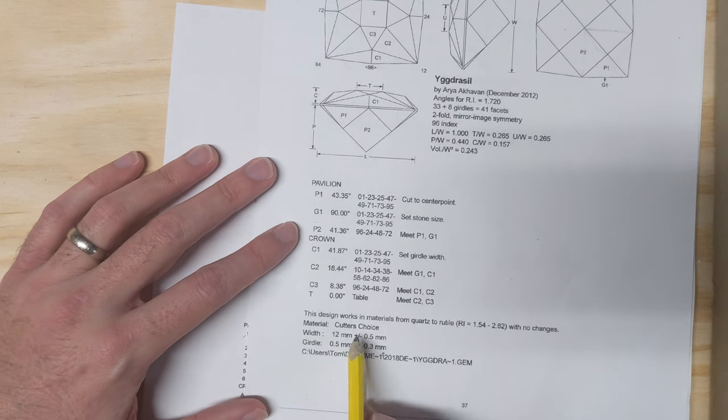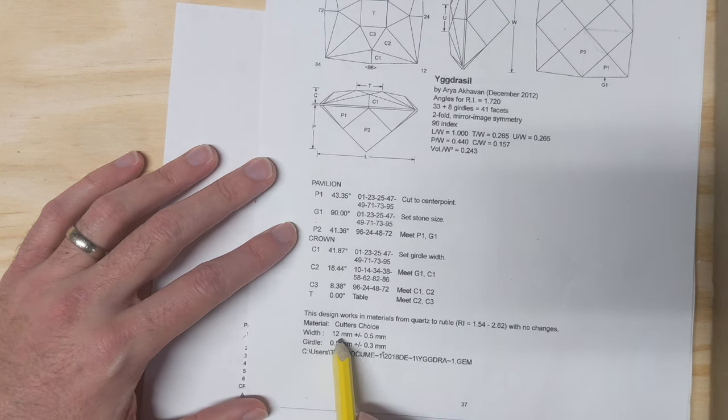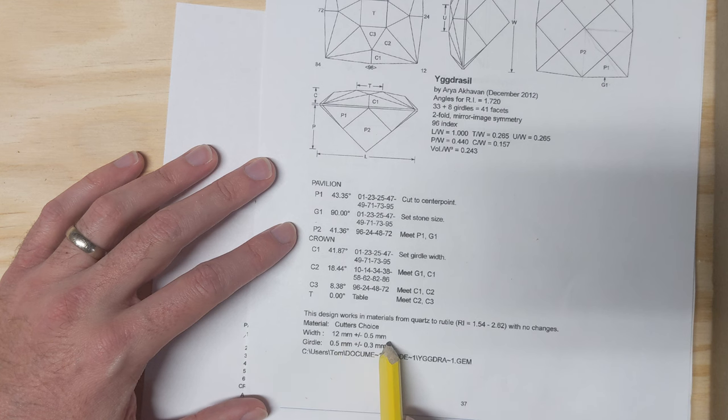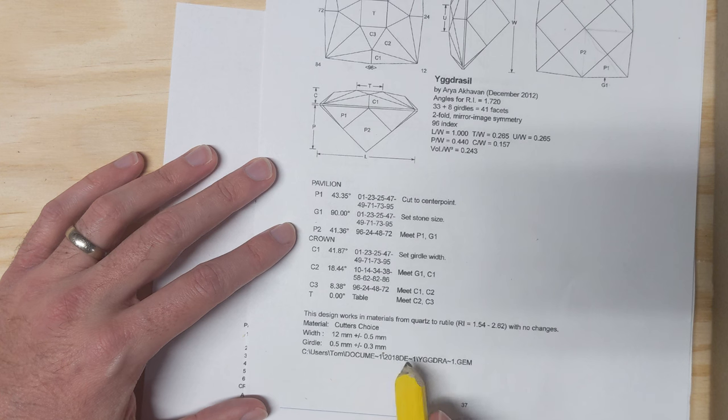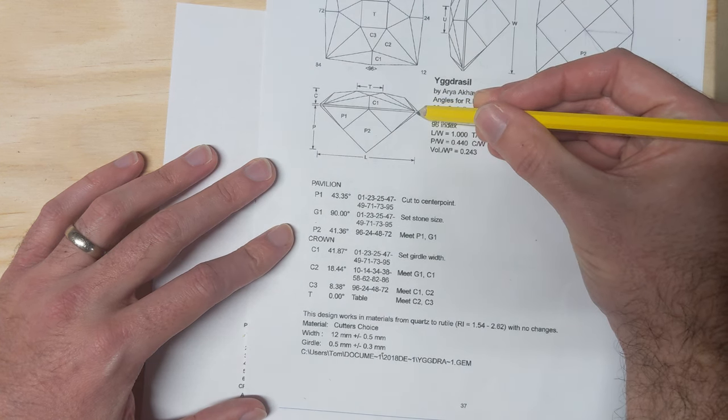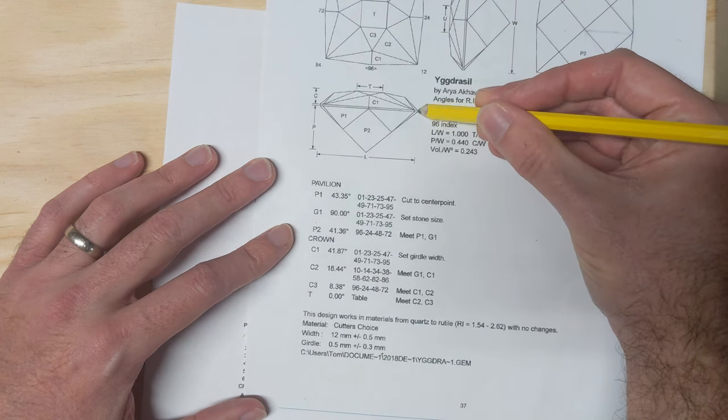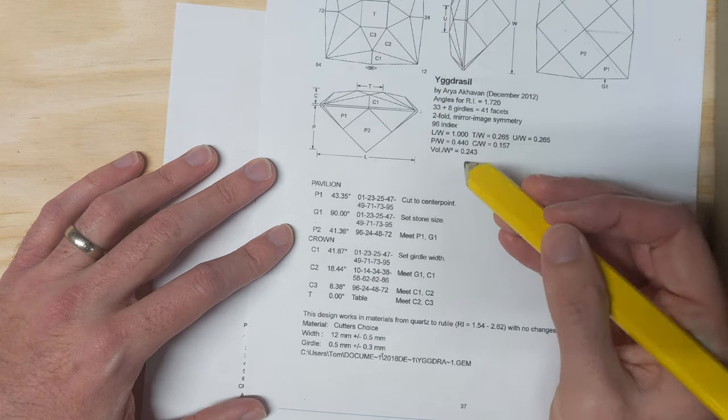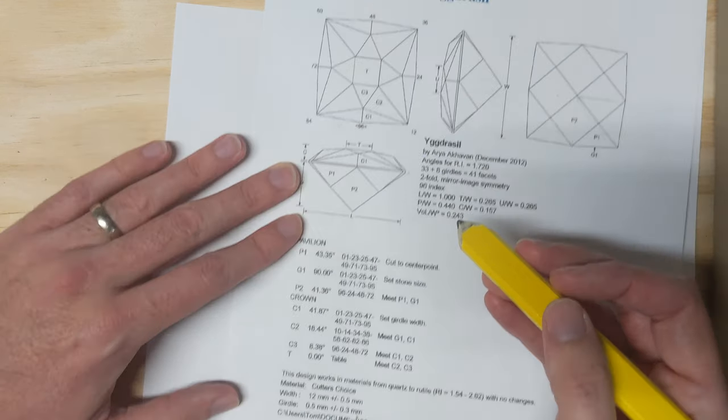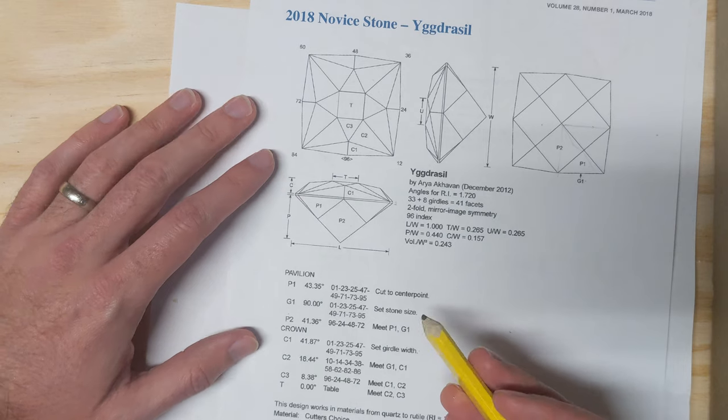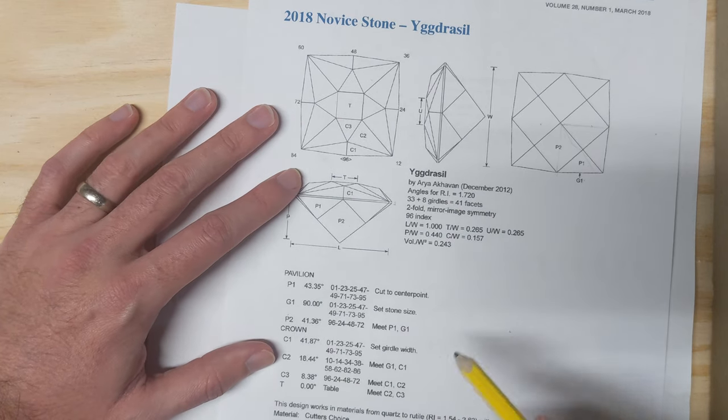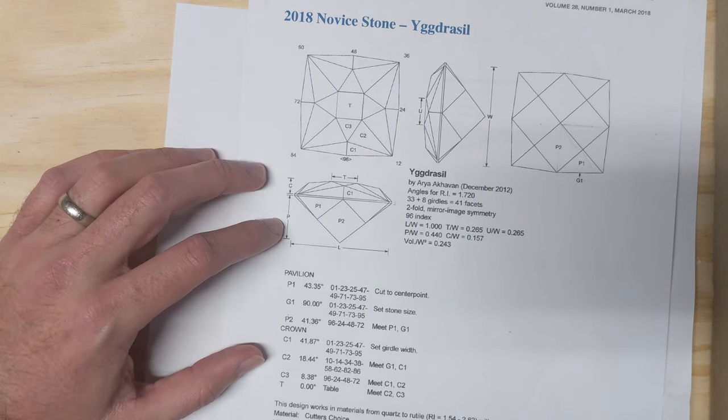The only stipulations for the contest are that the width has to be 12 millimeters plus or minus 0.5 millimeters, and the girdle has to be 0.5 millimeters plus or minus 0.3 millimeters. So the girdle is here, that has to be 0.5 millimeters in this direction, and the girdle has to be polished. A lot of people don't polish the girdles, but in the competition you have to. The width has to be 12 millimeters.